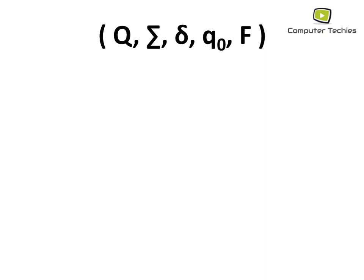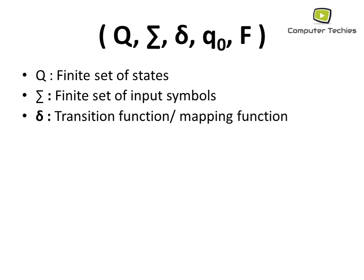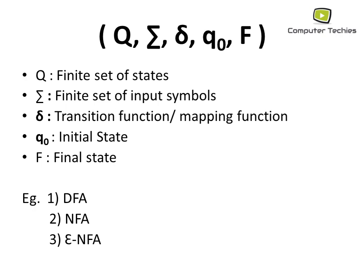Let's start with the first tuple representation — the five-tuple representation, including Q, Σ, δ, Q0, and F. Q is the finite set of states, Σ is the finite set of input symbols, δ is the transition function or mapping function, Q0 is the initial state, and F is the final state. This five-tuple representation applies to DFA, NFA, and Epsilon-NFA.